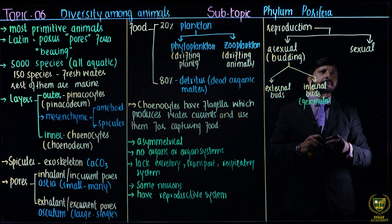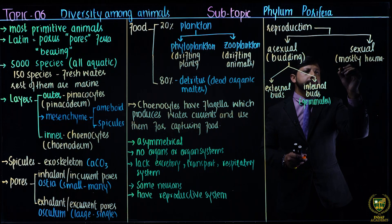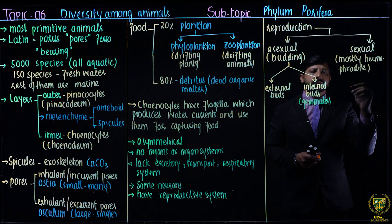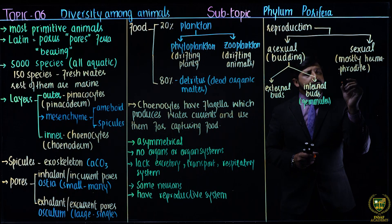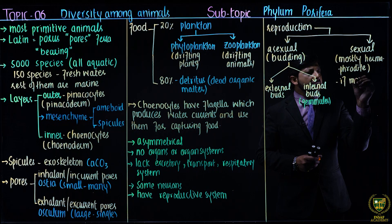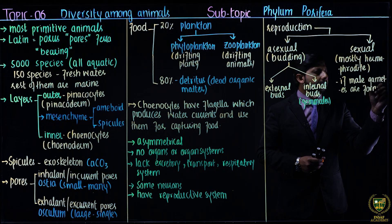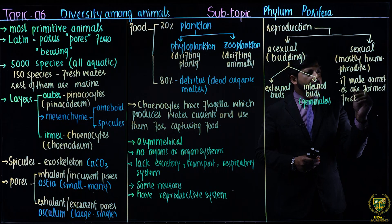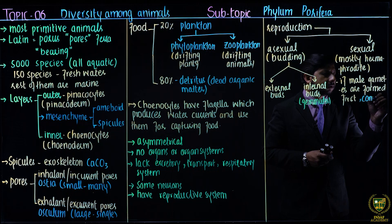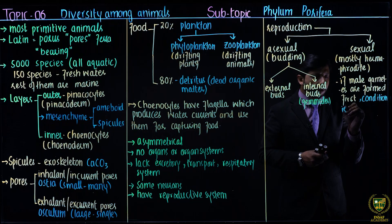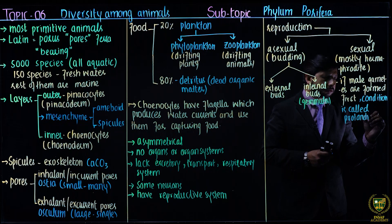Most of them are hermaphrodite — meaning in a single organism both gonads, or both sex cells, are formed. If male gametes are formed first, the condition is called protandrous.